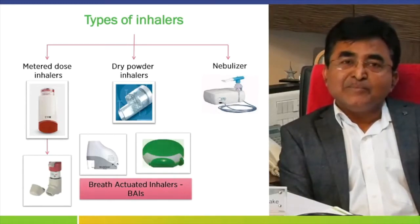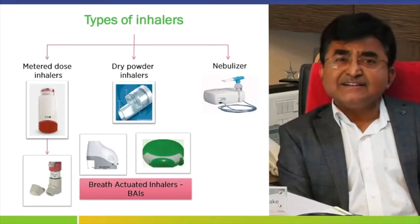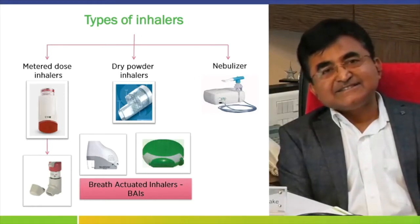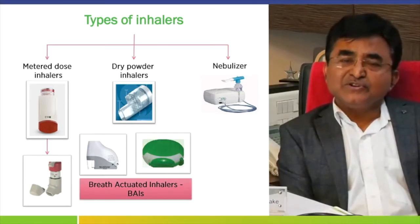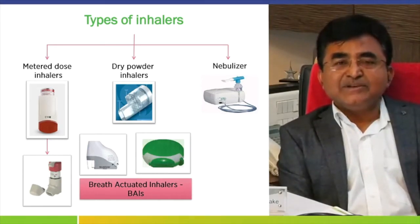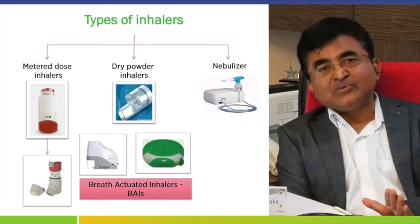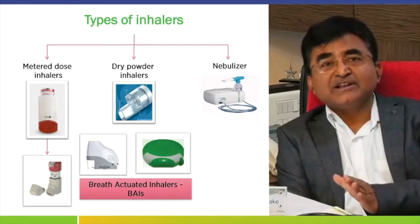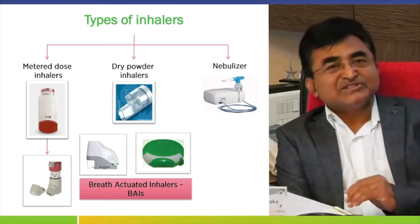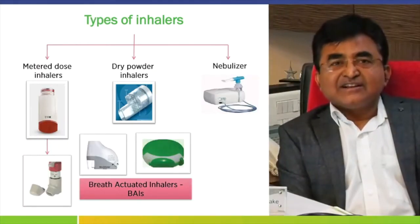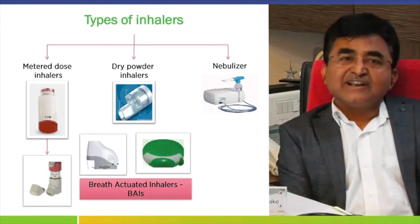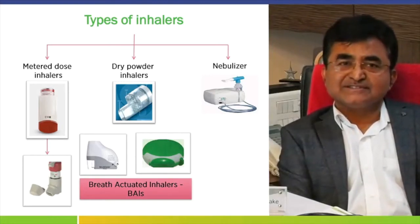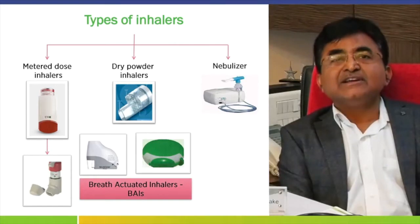There are different types of inhalers. One is MDI, that is metered dose inhaler. Second is DPI, that is dry powder inhaler, and third is nebulizer. In practice, MDI and DPI are used regularly; nebulizers are kept only for emergency cases and should be handled carefully as far as transmission of infection is concerned. Nowadays there are new devices called breath-actuated inhalers, which make patients more comfortable for inhaler medications.